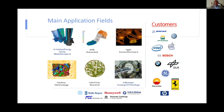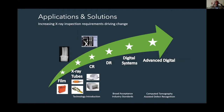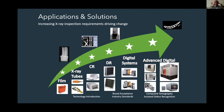Looking at the main users and different customers around the world who are using digital radiography and computerized tomography, we can find companies like Boeing, Apple, General Electric, Ferrari, Pratt & Whitney, Rolls-Royce, and others. This technology actually started from conventional film business using conventional X-ray tubes, and has now been modified to computerized radiography (CR), digital radiography (DR), and advanced digital technology with CT machines.